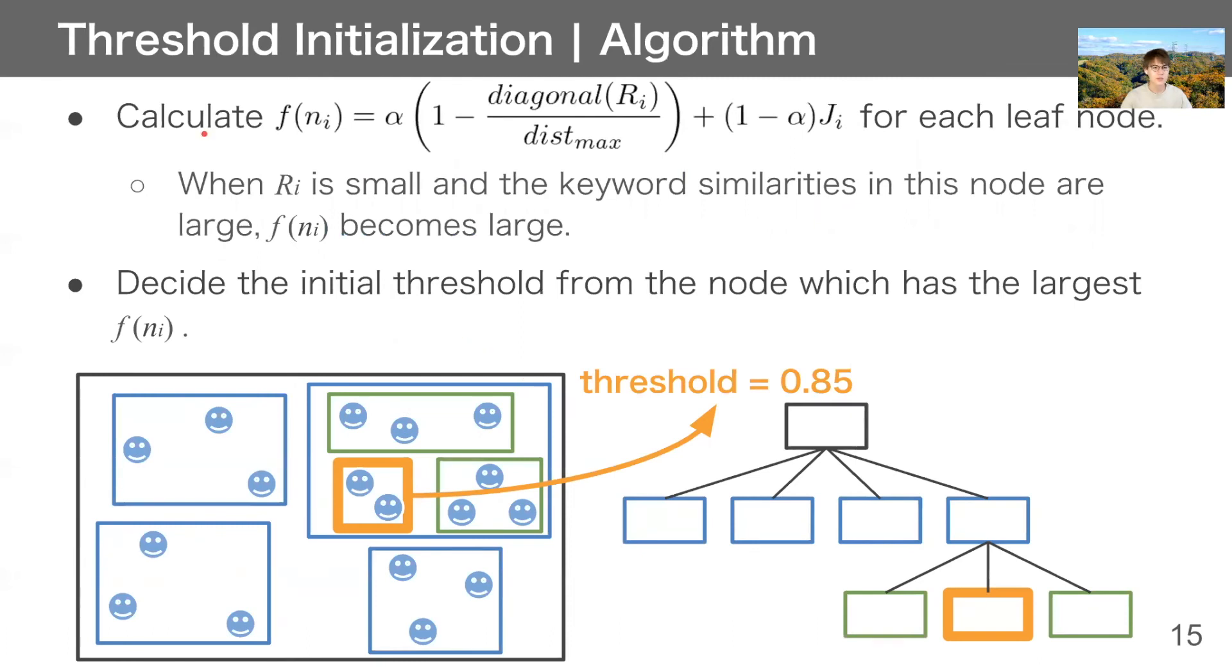Here is the detailed procedures. First, we calculate f(NI) for each leaf node. As you can see, when ri is small and the keyword similarities in this node, Ji are large, f(NI) becomes large. Then, decide the initial threshold from the node which has the largest f(NI). In this way, this initial threshold can be tighter than random.